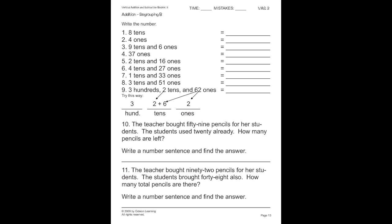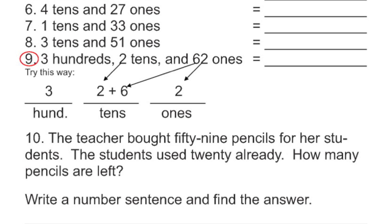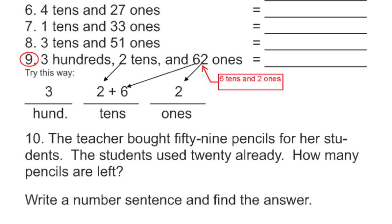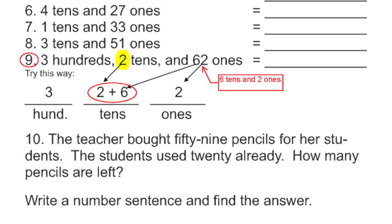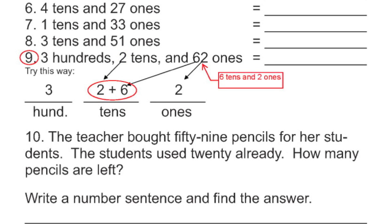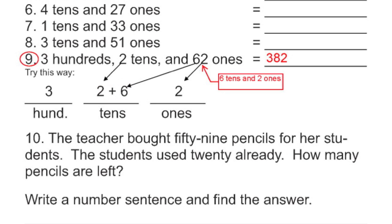Let's move on to page 13, starting with number 9. I have three hundreds, two tens, and 62 ones. I know 62 ones is the same thing as six tens and two ones. So I'll put the two ones into the ones column, add the six tens into the tens column along with the two tens already in the question, and I still have three hundreds. 2 plus 6 equals 8. There's no regrouping involved with the tens or the ones because both are below 10. So the total answer is 382.